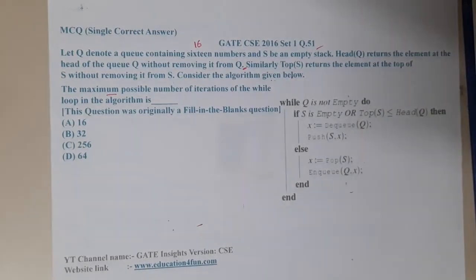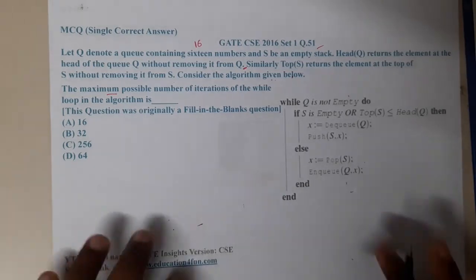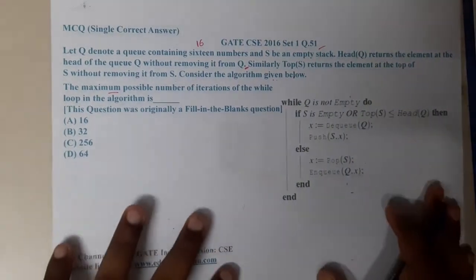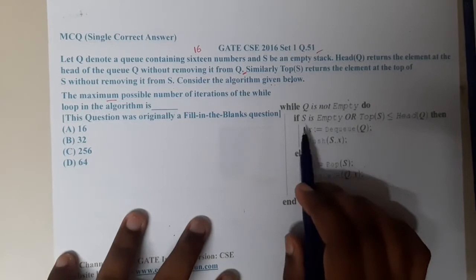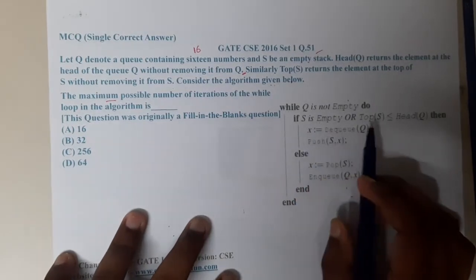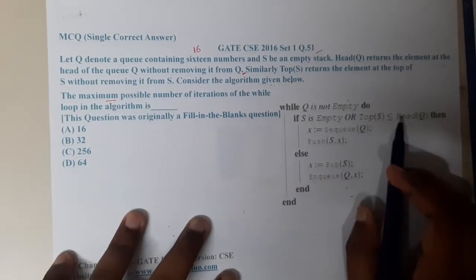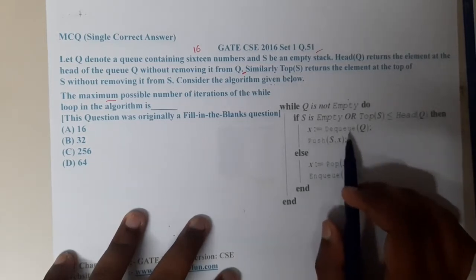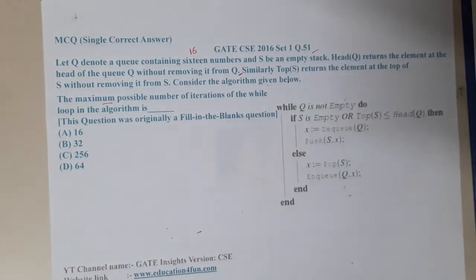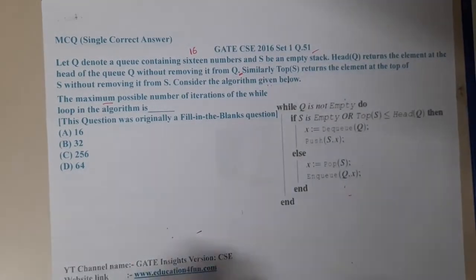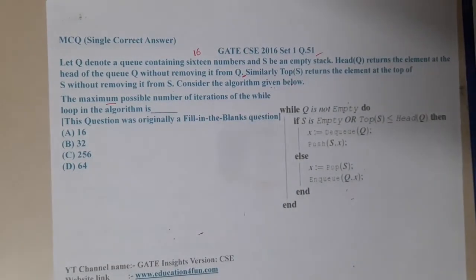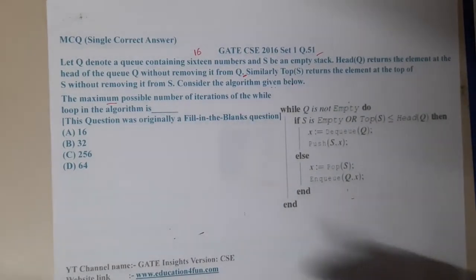Let us understand the logic for making this loop execute the longest time. The first condition checks: if S is empty or top of the stack is less than or equal to head, then we dequeue and push into the stack. Otherwise, we pop the value and enqueue it. So it is a combination of queue and stack operations.